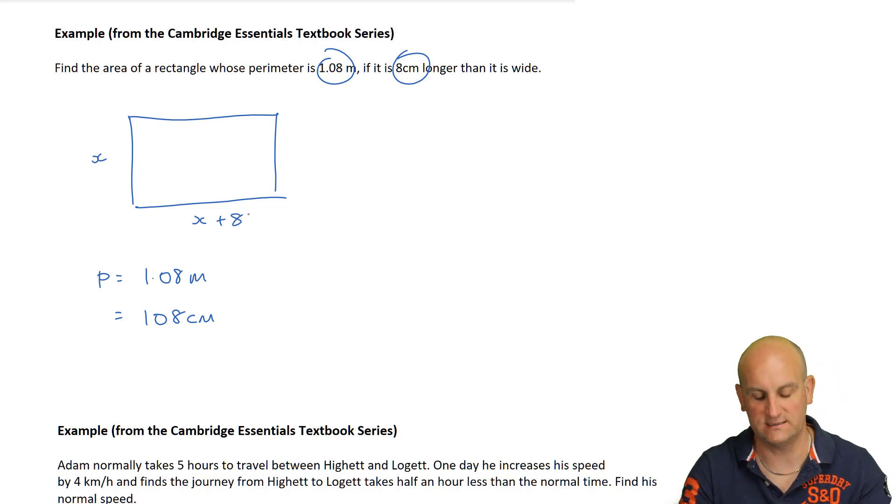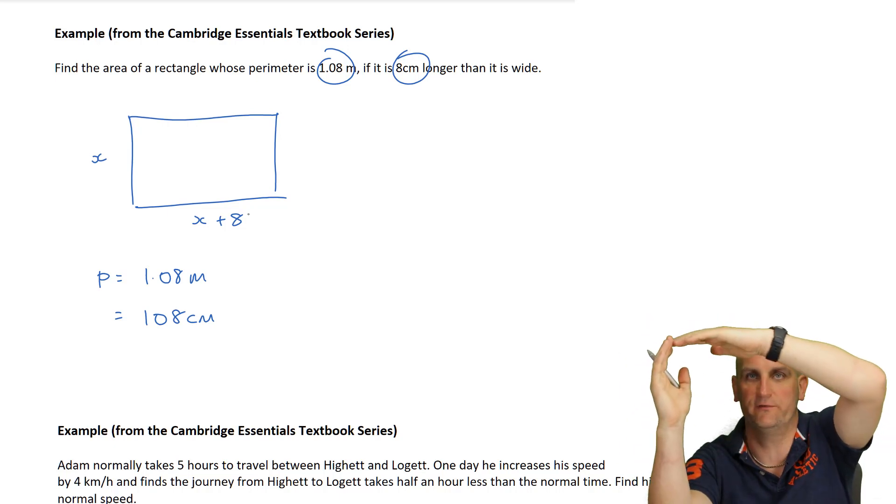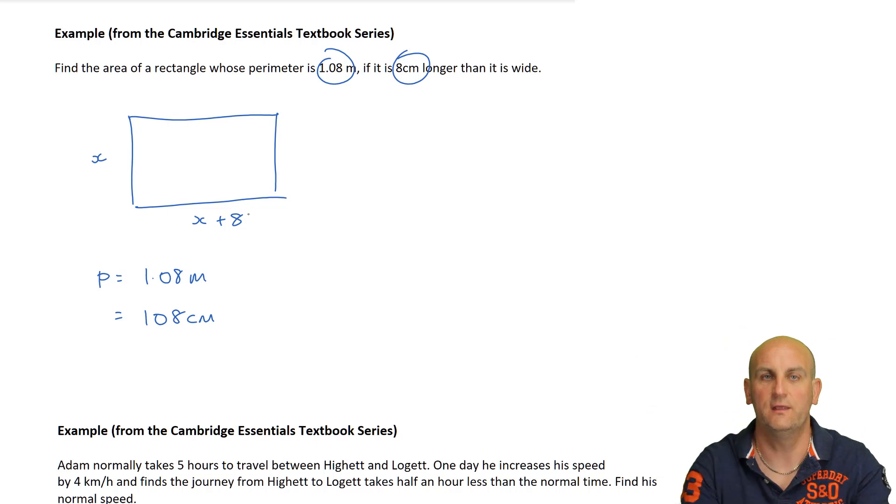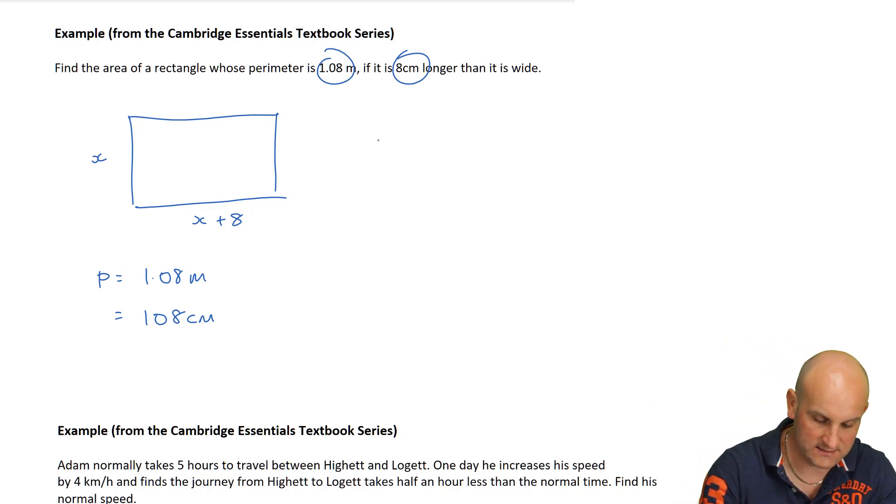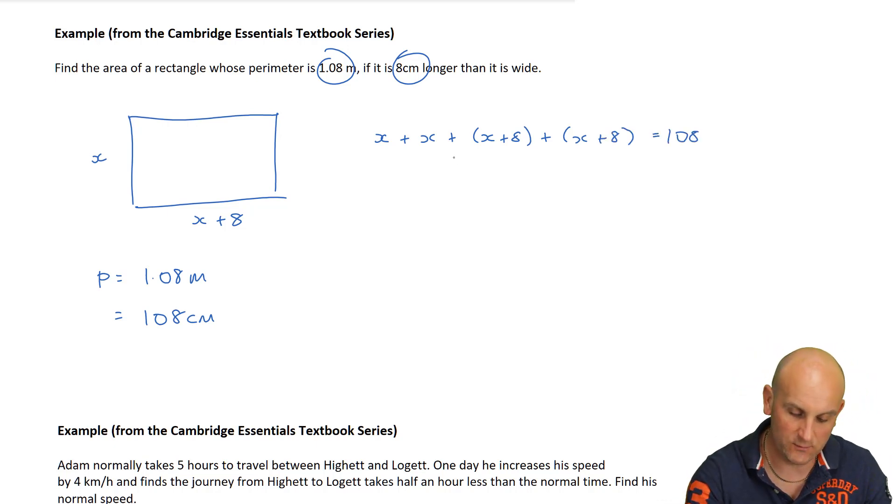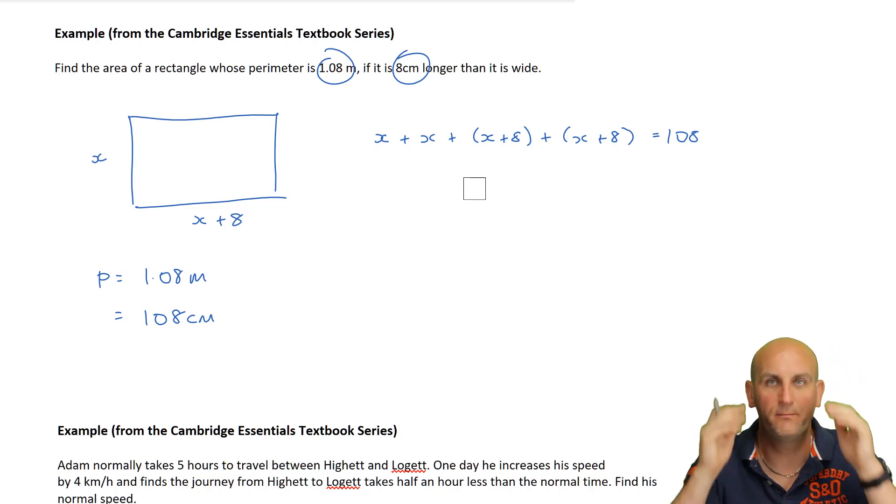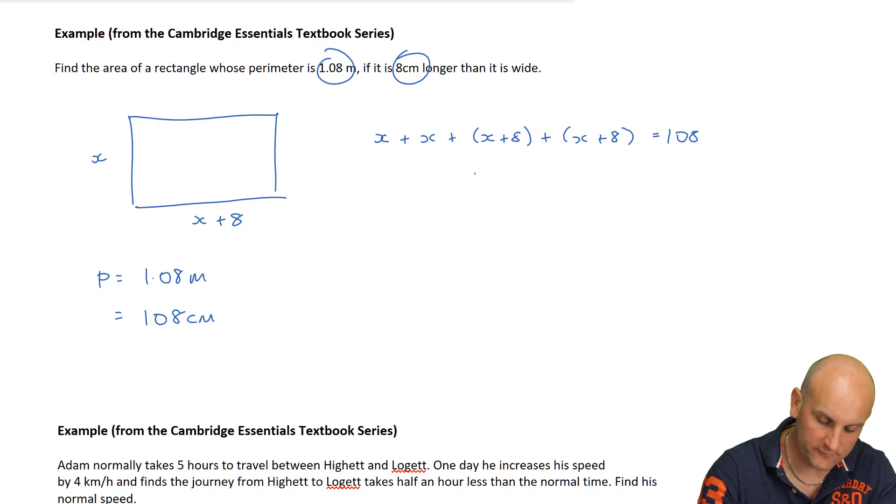We've got to find the area of the rectangle. We'll come back to that in a moment. But given that information and the perimeter, can I find the value of X? Yes, because the perimeter is that plus that plus that plus that. So we now know that X plus X plus X plus eight plus X plus eight equals 108. The reason I put them in brackets is because if this sign was negative, we'd have an issue.